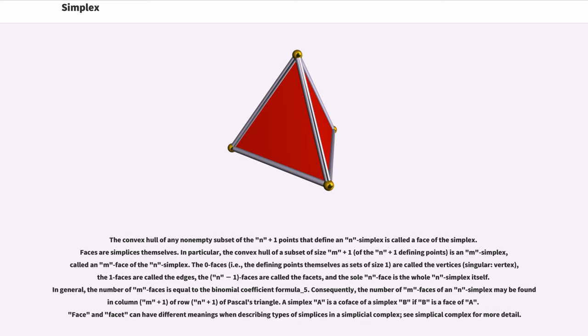The convex hull of any non-empty subset of the n plus 1 points that define an n simplex is called a face of the simplex. Faces are simplices themselves. In particular, the convex hull of a subset of size m plus 1 is an m simplex, called an m face of the n simplex. The 0-faces are called the vertices, the 1-faces are called the edges, the n-1 faces are called the facets, and the sole n face is the whole n simplex itself. In general, the number of m faces is equal to the binomial coefficient. Consequently, the number of m faces of an n simplex may be found in column m of row n of Pascal's triangle. A simplex A is a co-face of a simplex B if B is a face of A. Face and facet can have different meanings when describing types of simplices in a simplicial complex.